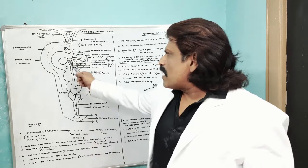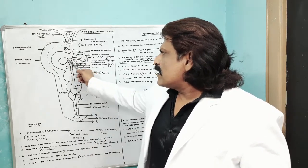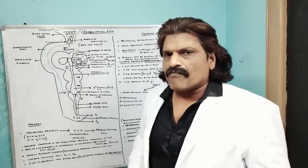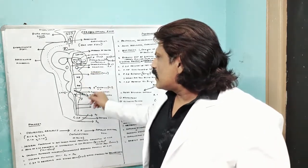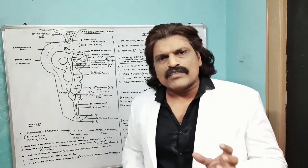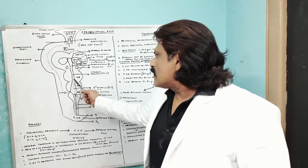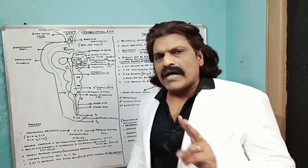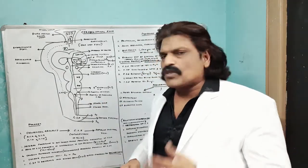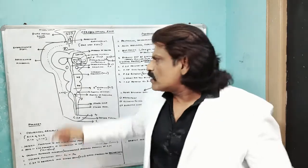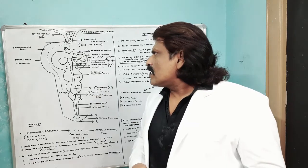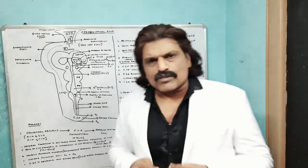So basically, the lateral ventricles come together and connect to the third ventricle through the foramen of Monro. The third ventricle is connected to the fourth ventricle through the cerebral aqueduct. The third ventricle lies between the two thalami, and the fourth ventricle gives two lateral foramina of Luschka and a median foramen of Magendie, through which the cerebrospinal fluid comes out and circulates around the brain and spinal cord underneath the arachnoid membrane — that is the subarachnoid space.